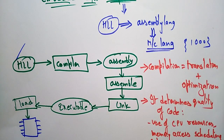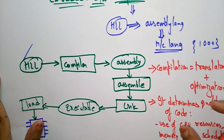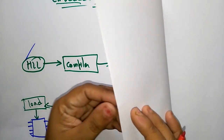So this is a general description of compilation. Compilation is nothing but a combination of translation plus optimization. Now let me explain the structure of the compiler.